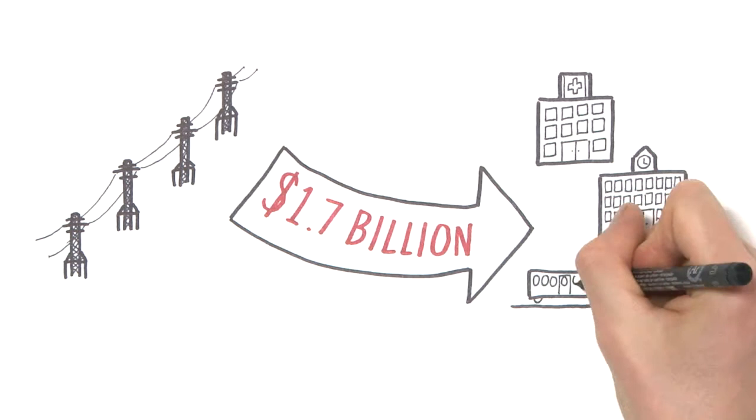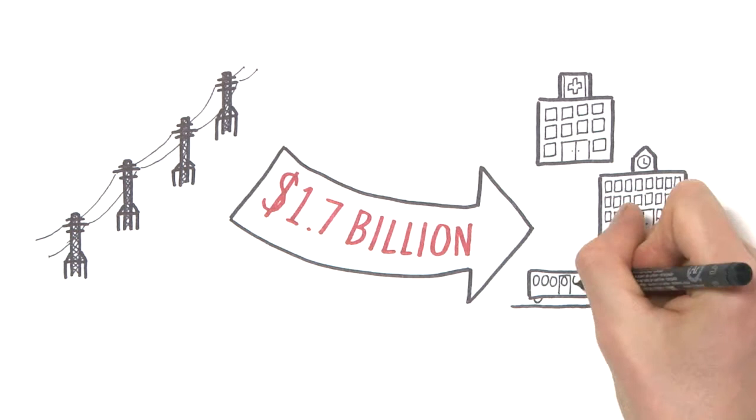Once the poles and wires are sold, we lose this money, meaning that we'll have to find it from somewhere else or cut back on other services. This is the real story about electricity privatization. It benefits private companies and their shareholders while you and your community are left paying higher prices.